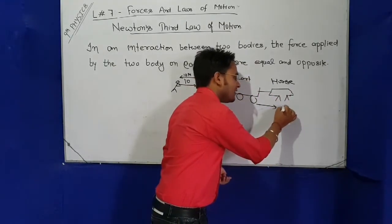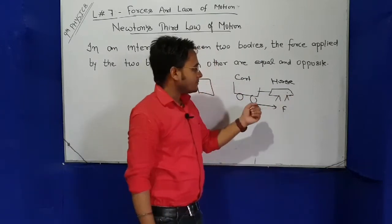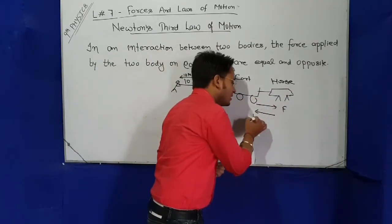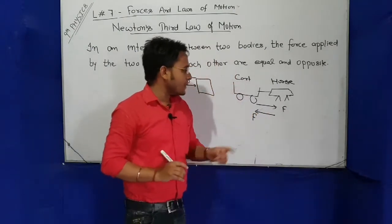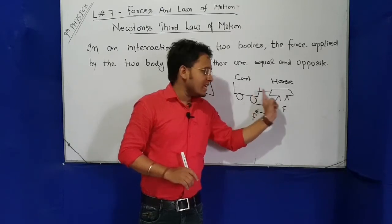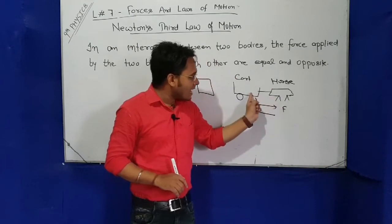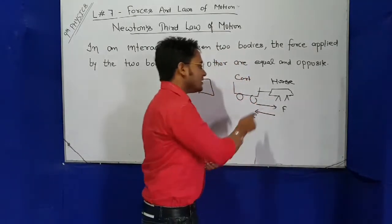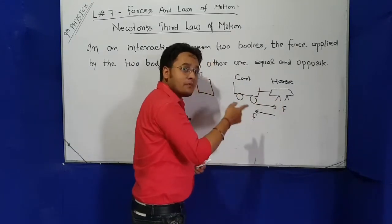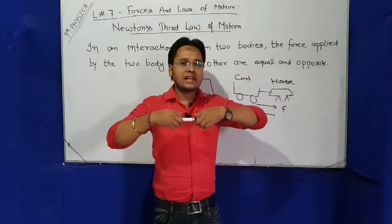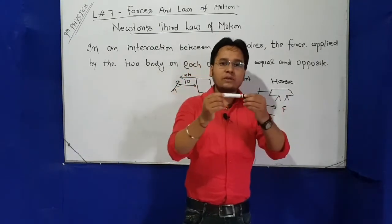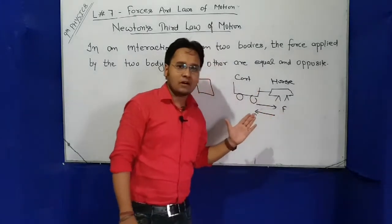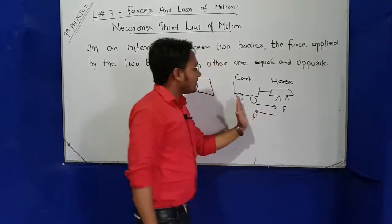The horse applied force on the cart forward. According to third law, the cart also applies equal but opposite direction force on the horse backward. So the horse applies force on cart forward, and according to third law of motion, the cart applies force on horse backward, equal but opposite direction. The confusion here is: when both apply force in opposite directions, why does the cart move? If I push this forward with 10 Newtons and pull backward with 10 Newtons, the body should not move. So then how does the cart move?